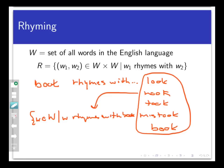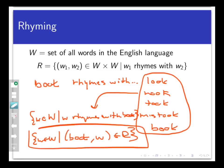such that the pair (book, w) belongs to my relation R, the rhyming relation. So this set we're referring to is just the set of words to which book is related under the rhyming relation R.